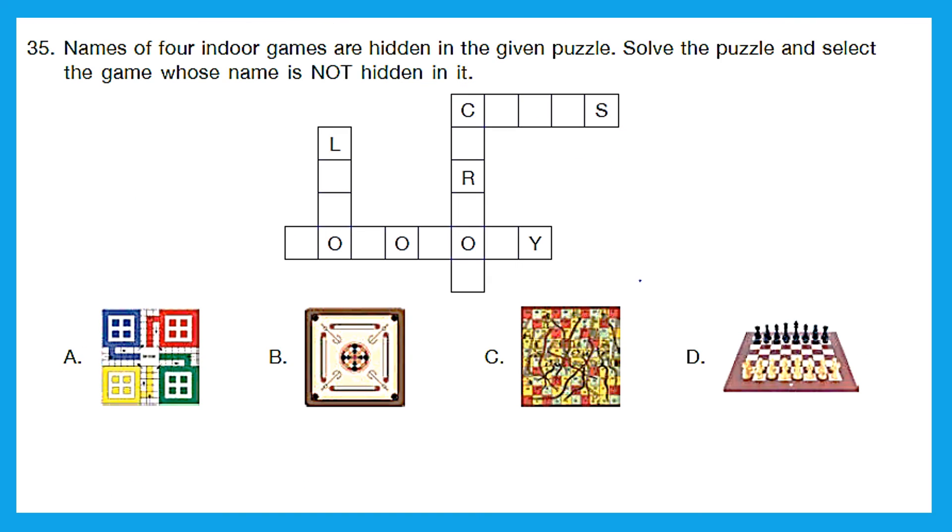Question 35. Names of 4 indoor games are hidden in the given puzzle. Solve the puzzle and select the game whose name is not hidden in it. So let's first do the crossword. The first one comes here is Ludo and Ludo is there, that is option A. Then filling the crosswords we find Carrom also. So Carrom is also there, that is option B. Then from left to right we get Chess. So option D, Chess is also there. The last one is actually Monopoly. So what did we not find? We did not find snakes and ladders, that is option C.